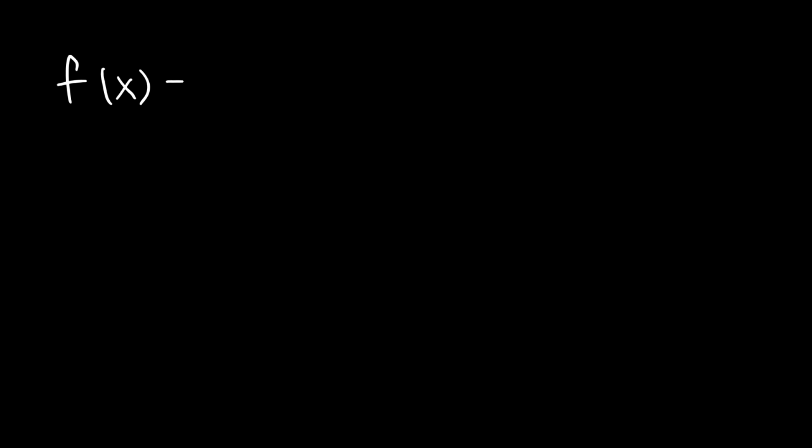In this video, we're going to talk about how to find the vertical asymptote of a function. So consider this function: 1 over x minus 3. How can we find the vertical asymptote?